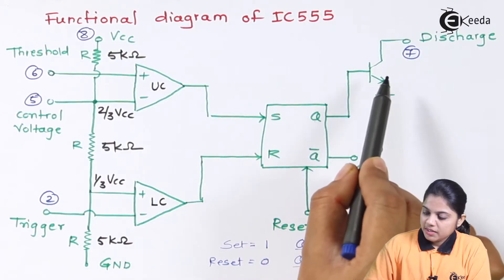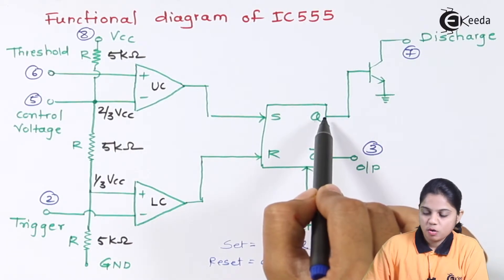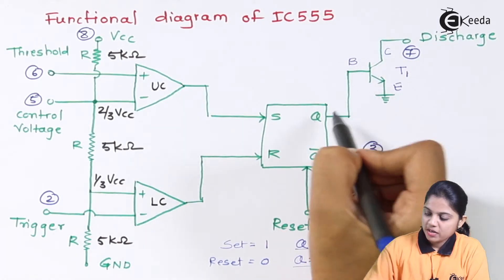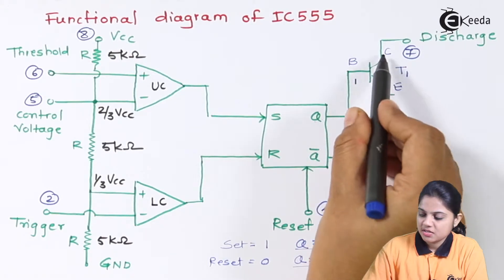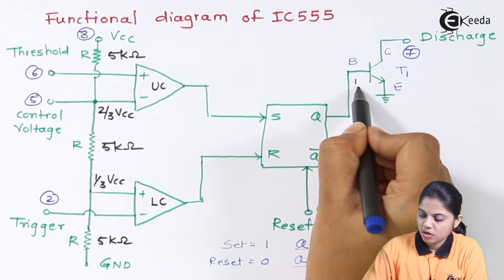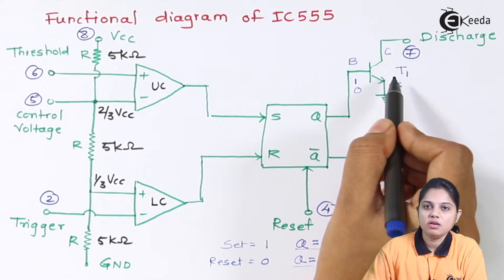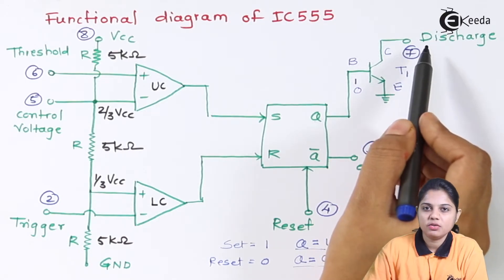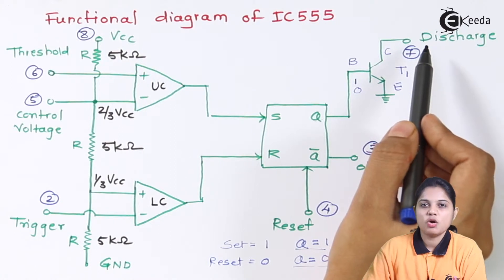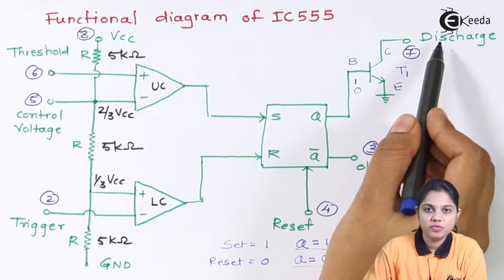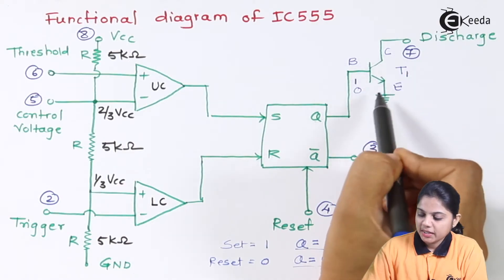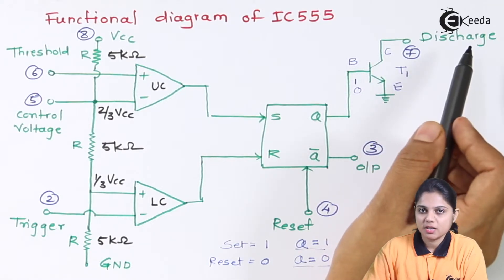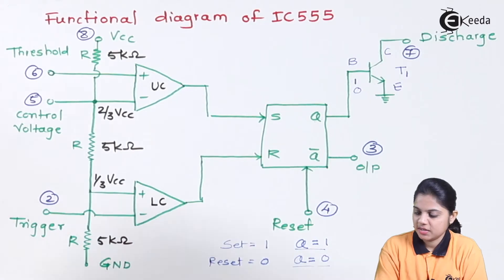Now let's look at the discharge. We have a transistor connected at the output of the flip-flop — Q is connected to the base of the transistor, which I'll call T1, with collector, base, and emitter. If Q equals 1 at the base, the transistor turns on; if Q equals 0, the transistor is in the off condition. The collector of the transistor is connected to the discharge pin. When used as a multivibrator, a capacitor is connected to this discharge pin. Turning the transistor on discharges the capacitor, and turning it off allows the capacitor to charge.